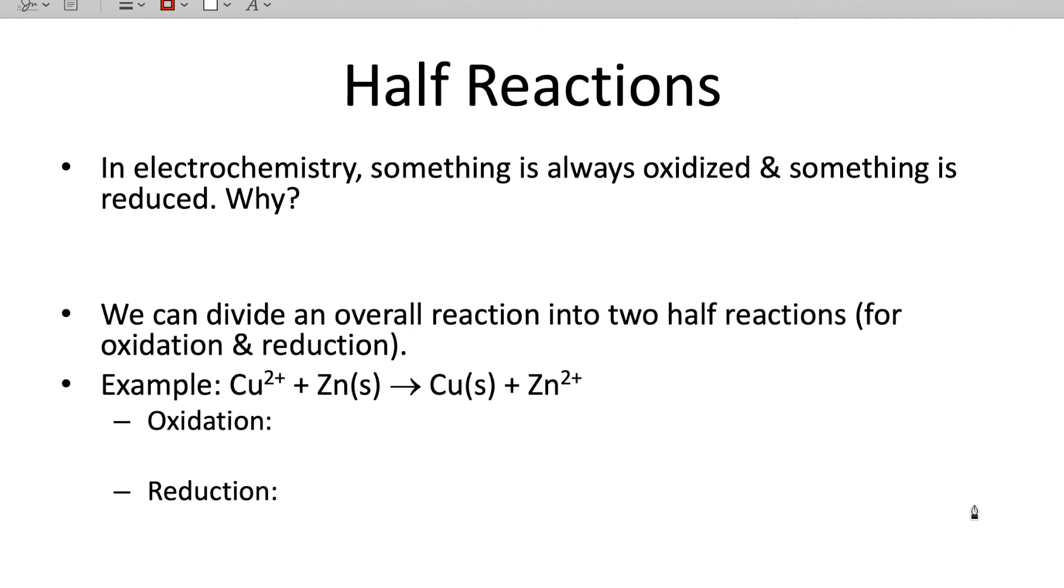So as a reminder when we have electrochemistry something's always oxidized and something's always reduced. Why does that happen? Go ahead and take a second and think about that. One of the reasons why this happens is because of the conservation of matter, specifically electrons. If something is losing electrons, something else has to gain the electrons. So that's why oxidation always goes together with reduction.